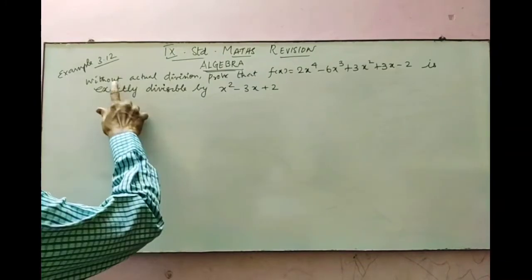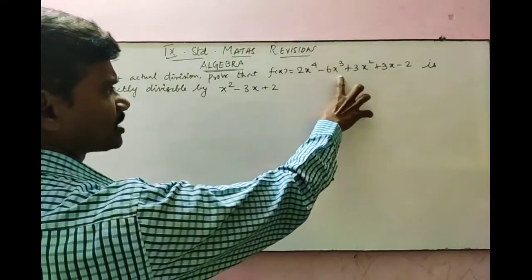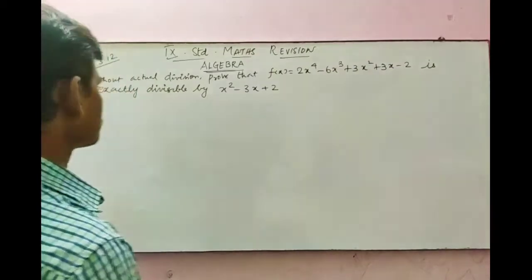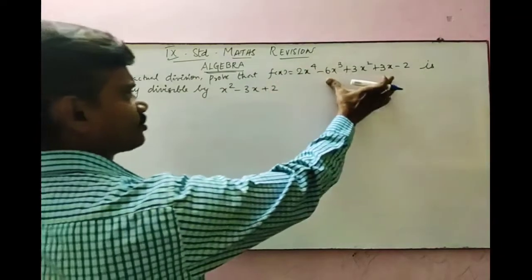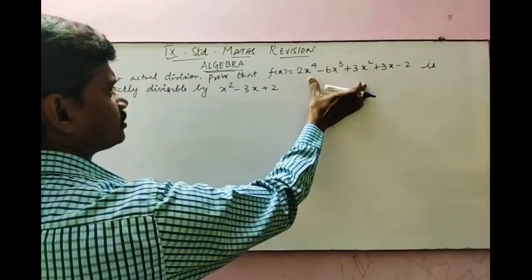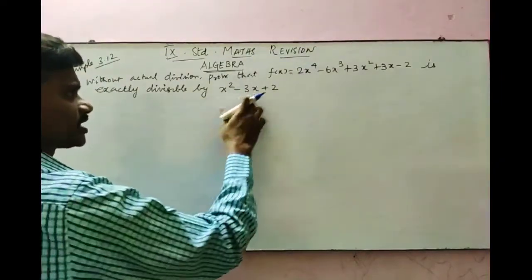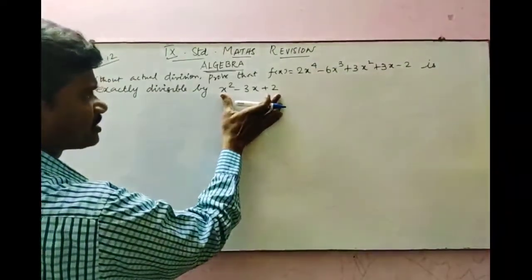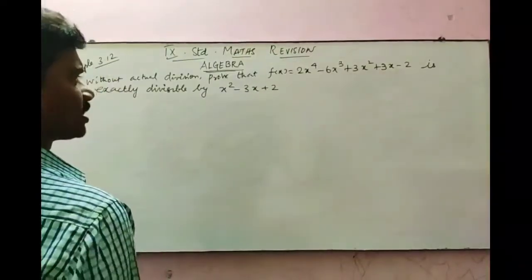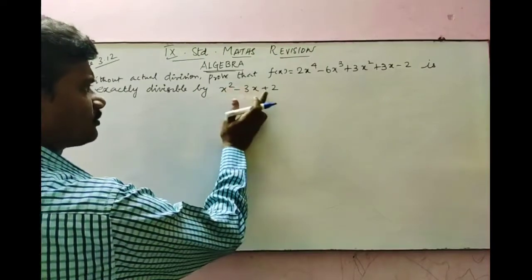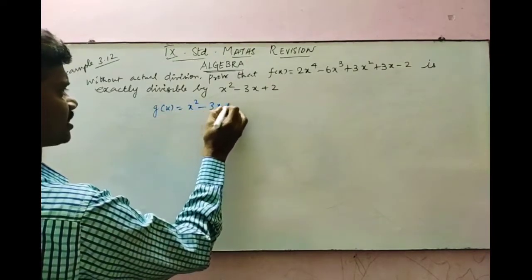In example 3.12, the question is: without actual division, prove that F of x equals 2x to the power 4 minus 6x cubed plus 3x squared plus 3x minus 2 is exactly divisible by x squared minus 3x plus 2. Since the divisor is quadratic, not linear, we first factorize it. Let g of x equal x squared minus 3x plus 2.